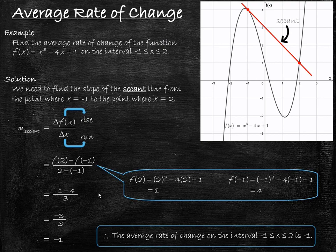This value is simply the rate of change that we would need to go from our first point to our second point on our graph if we were to do so at a constant rate of change.